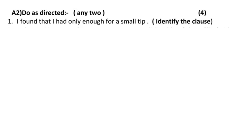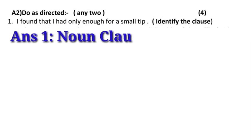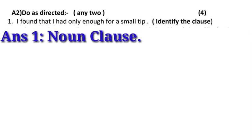Now let us study the first one: 'I found that I had only enough for a small trifle.' Here you have to identify the clause. As you can see, 'that' is given, which means it is a noun clause, because 'that' always acts as a subordinator. So the answer here is noun clause.